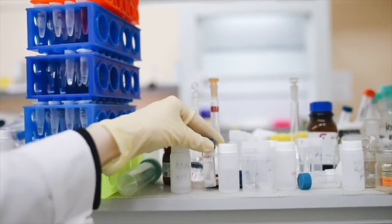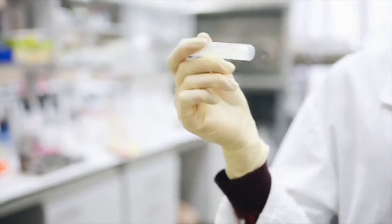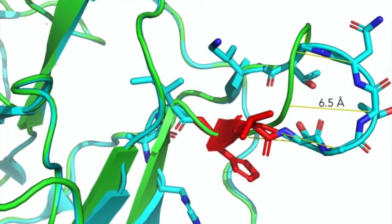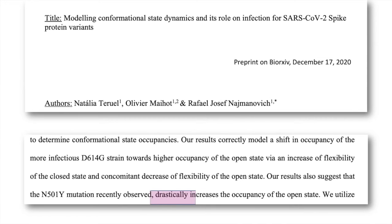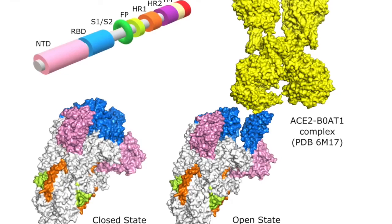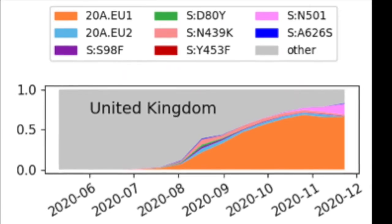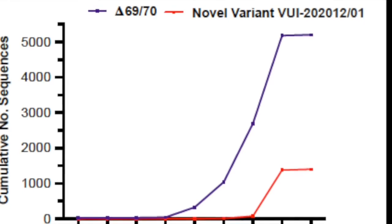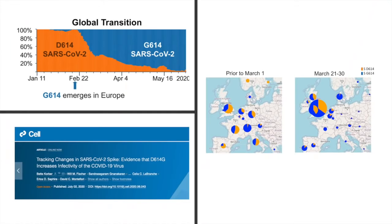Scientists can observe the mutations and how common they are, and researchers can use models to estimate the effect these changes have on how the virus functions. In fact, computer models have shown that the N501Y mutation could make the coronavirus very effective at docking with ACE2 receptors. But ultimately, the effect in the real world is subject to many more confounding factors. Even the observation that the virus seems more prevalent in fast-moving infections is only a correlation.